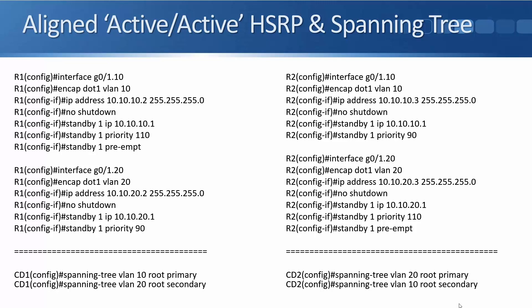That's my layer 3 config. I also want to configure spanning tree so that VLAN 20 traffic goes through CD2. On the CD2 switch, I say spanning tree VLAN 20 root primary. And for failover on CD1, I've got spanning tree VLAN 20 root secondary. So that's how you do your configuration where you line up HSRP and spanning tree to get load balancing. You also get automatic failover as well.